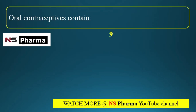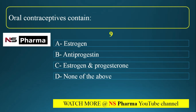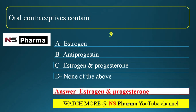Question number nine: oral contraceptives contain. Options are: option A, estrogen; option B, anti-progestin; option C, estrogen and progesterone; option D, none of the above. The correct answer is option C, that is estrogen and progesterone. In some oral contraceptives, it may contain only progesterone also, but the listed option is estrogen and progesterone. Anti-progestin is mifepristone, which is used for the termination of pregnancy.